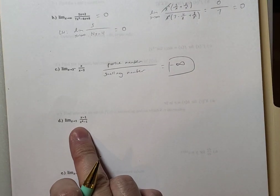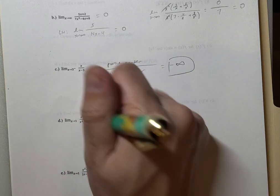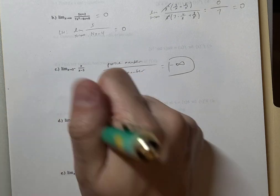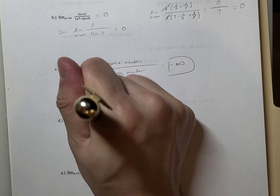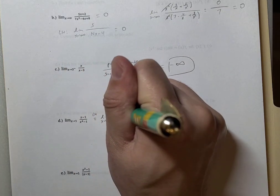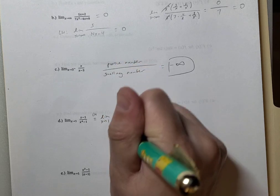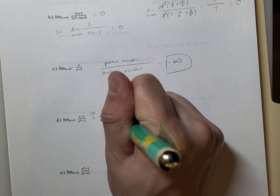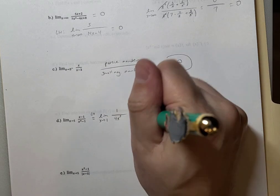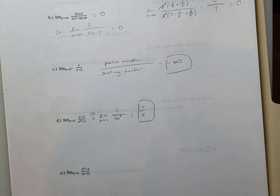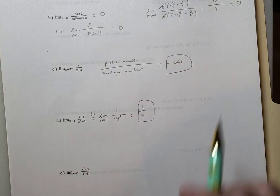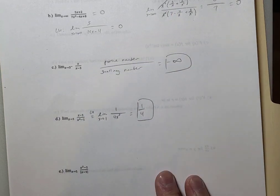For the limit as x approaches 1 of this expression, we can use L'Hôpital's rule because it'll be 0 over 0 — that's indeterminate. The limit as x approaches 1: the derivative of the top is 1, the derivative of the bottom is 4x cubed, which gives 1 over 4, and 1 fourth is the limit.